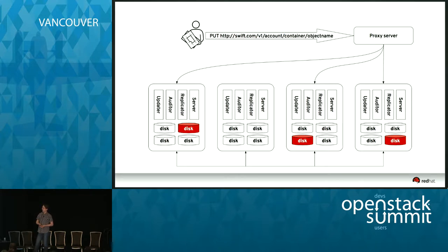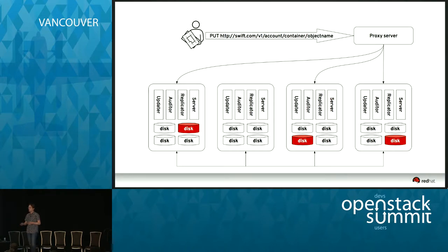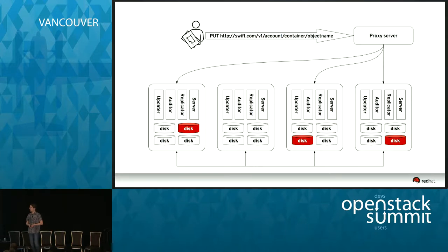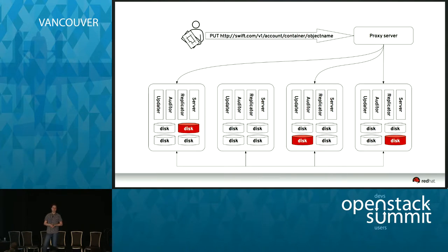The auditors ensure that data stored in the past is still readable and still equals what you stored one or two years ago. They do this by reading objects or container databases, building a hash, and comparing it to a previously calculated hash. In case of a mismatch, the object is moved to a quarantine section and replaced later by the replicators. There are a lot of things going on in a Swift cluster — lots of processes, lots of network traffic from replicators and proxy servers to storage nodes and vice versa. So you need to monitor all of this.